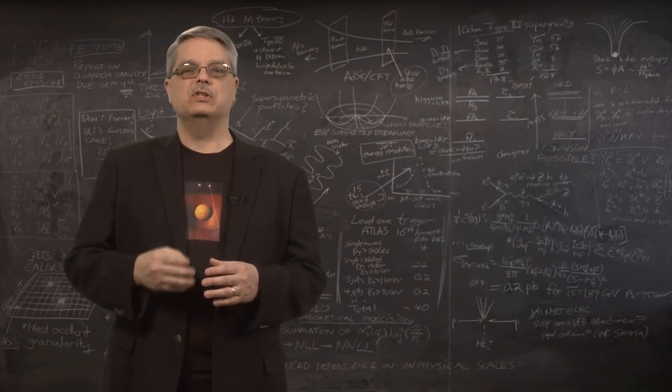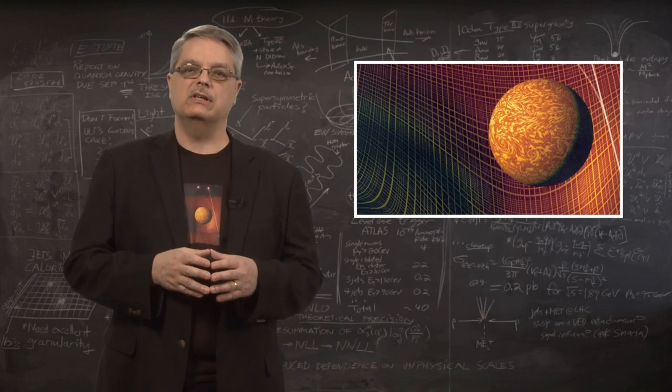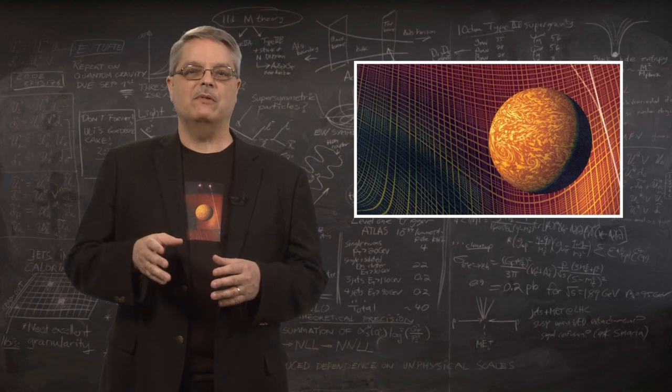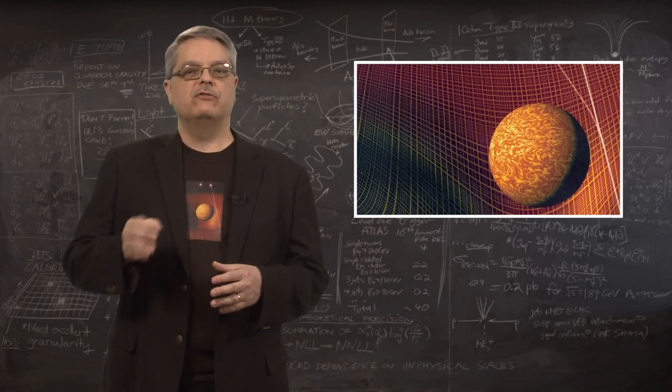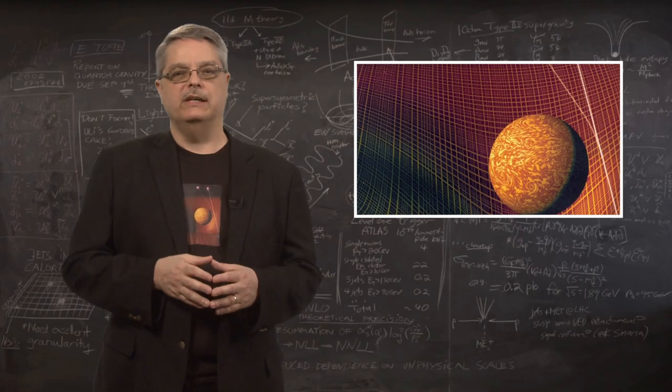When he looked at the position of distant stars very close to the sun, he found that the positions of some of them weren't as expected. The effect of gravity had altered the path of light.